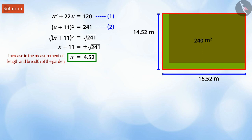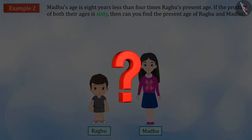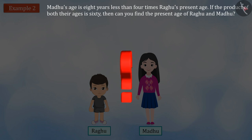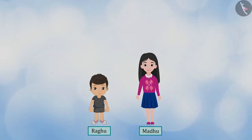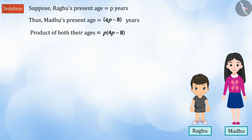Let us look at another example. Madhu's age is 8 years less than 4 times Raghu's present age. If the product of the ages is 60, then can you find the present age of Raghu and Madhu? Suppose Raghu's present age is equal to p years. According to the question, Madhu's age is 8 less than 4 times Raghu's present age. That is, Madhu's age will be equal to 4p minus 8 years. The product of both their ages is given as 60, which we shall consider as equation 1.